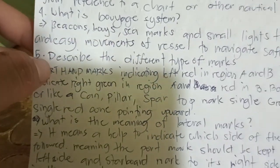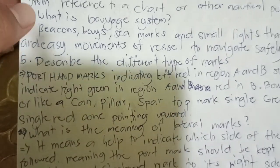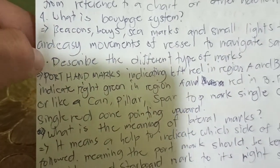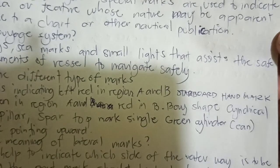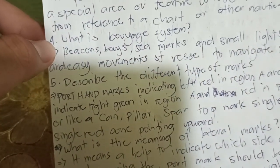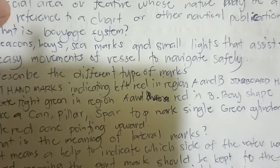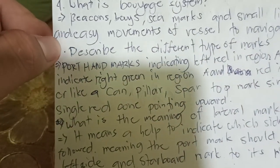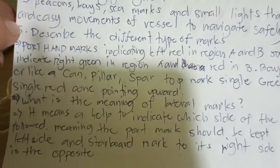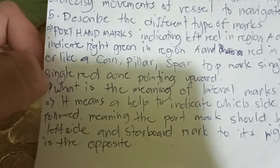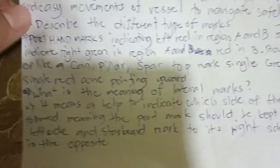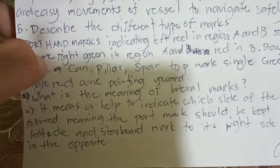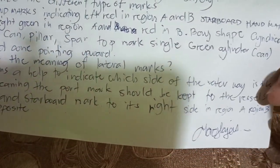Number five, describe the different types of marks. Port hand marks indicate left, red in region A and B. Starboard hand marks indicate right, green in region A and red in region B. A buoy shaped conical, or like a can, pillar, or spar top mark — single green cylinder or can, single red cone pointing upward. Lateral marks help to indicate which side of the waterway is to be followed, meaning the port mark should be kept to the vessel's left side and starboard mark to its right side in region A. Region B is the opposite.